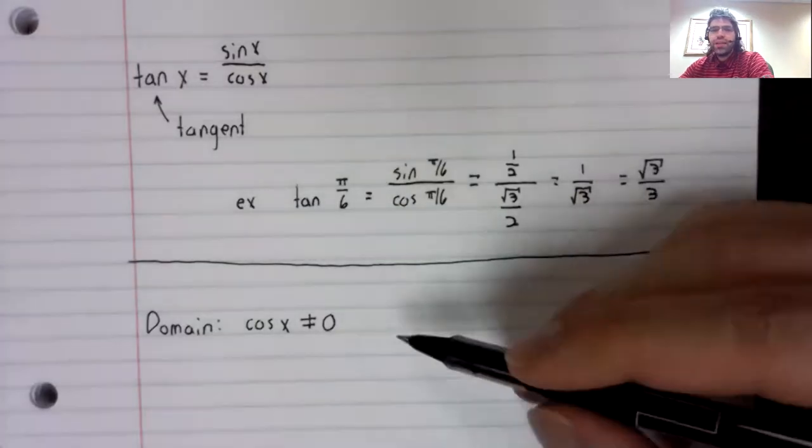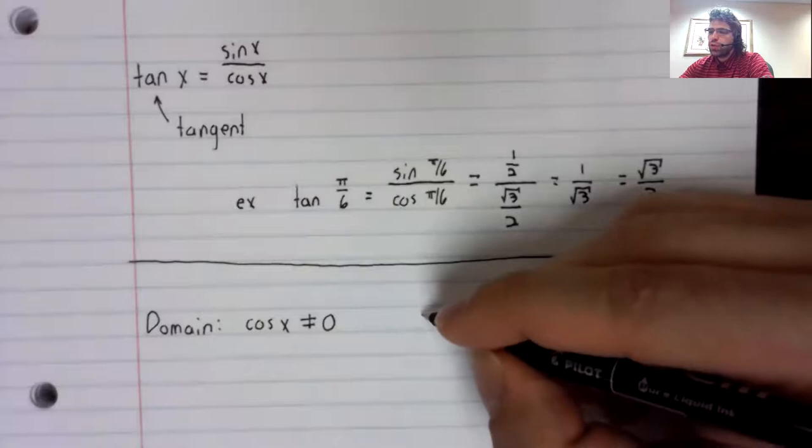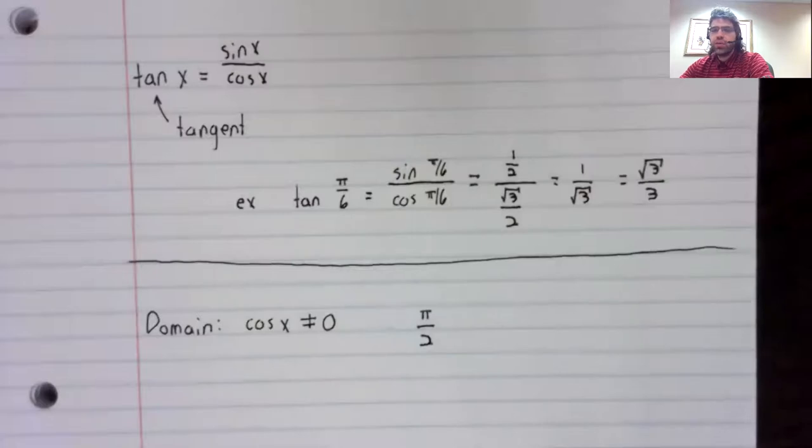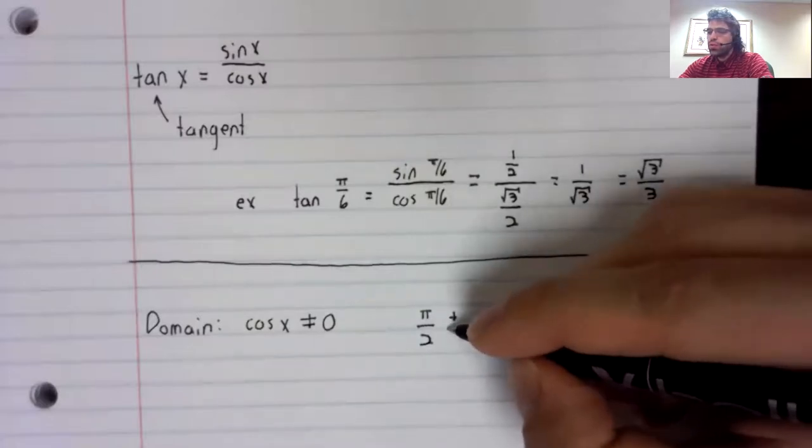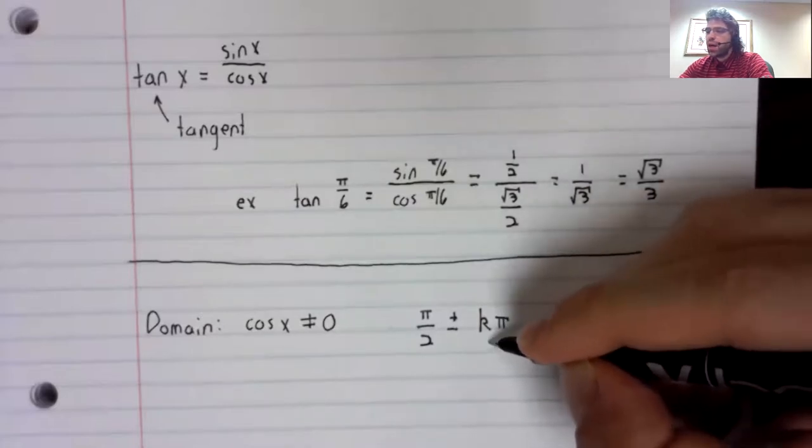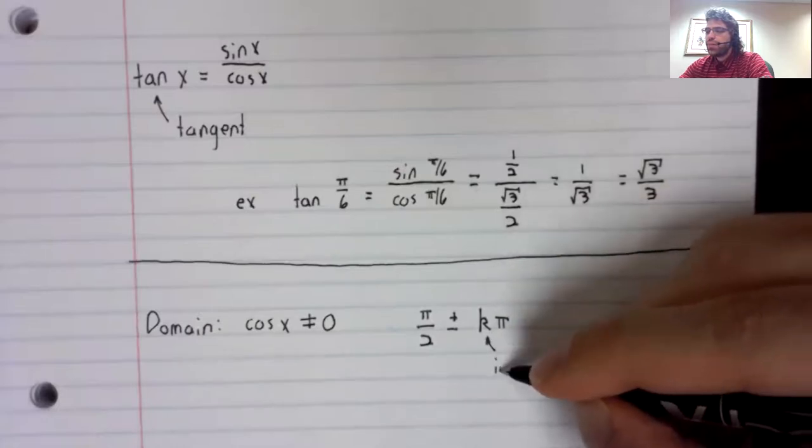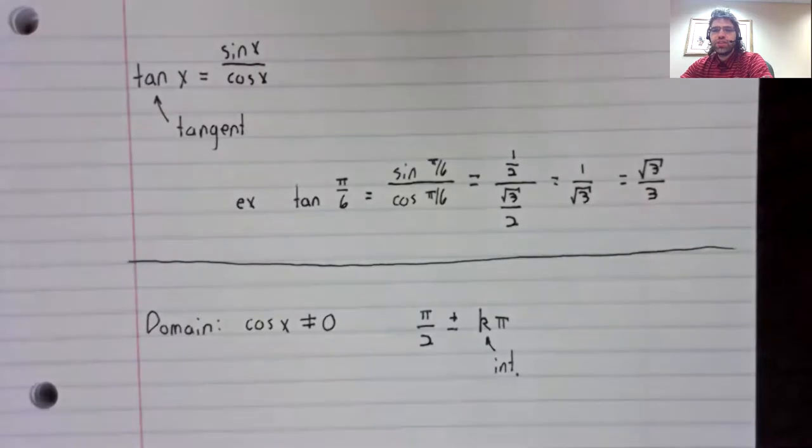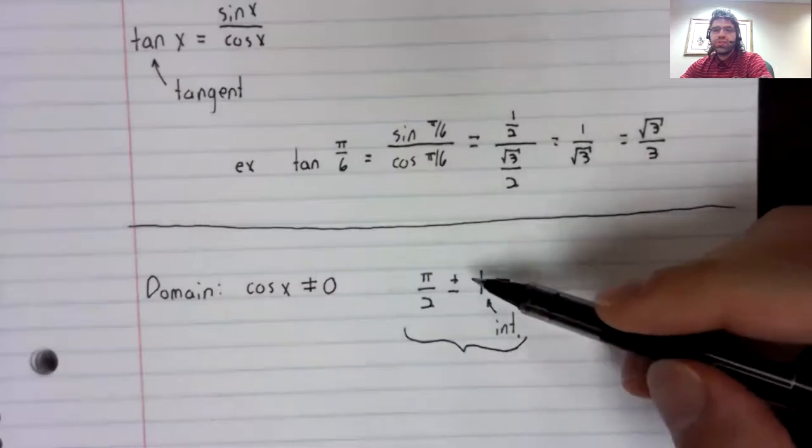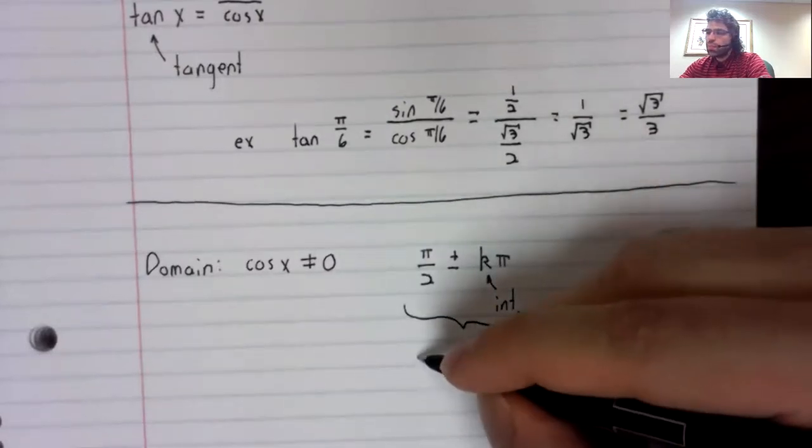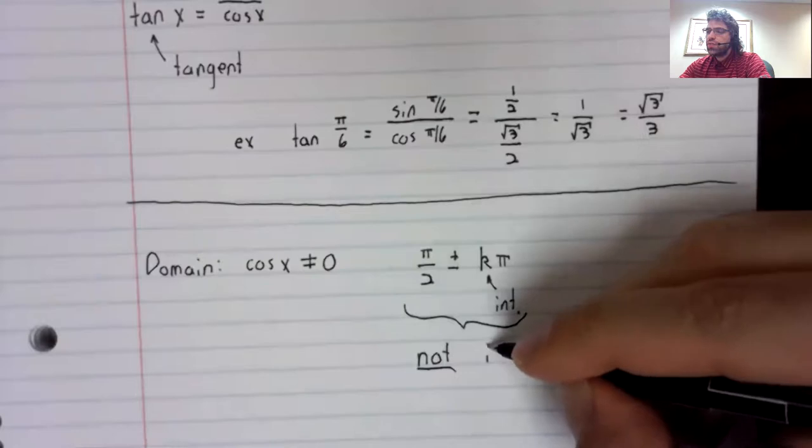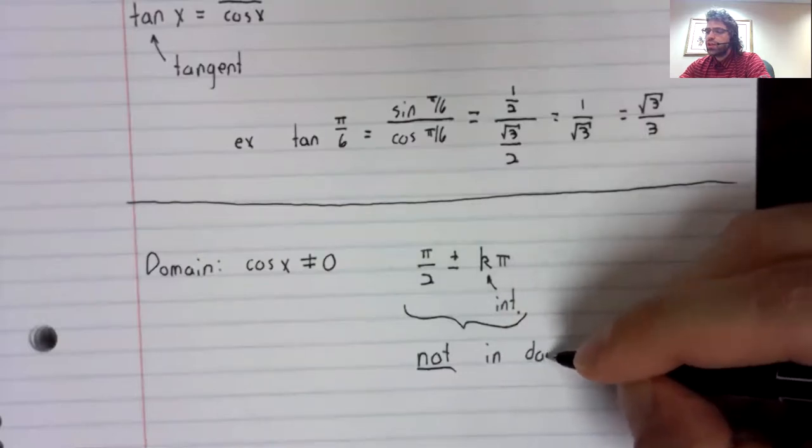When is the cosine zero? It's equal to zero at pi over two, plus or minus k pi, where k is an integer. So, this infinite list of numbers, these are the numbers not in the domain.